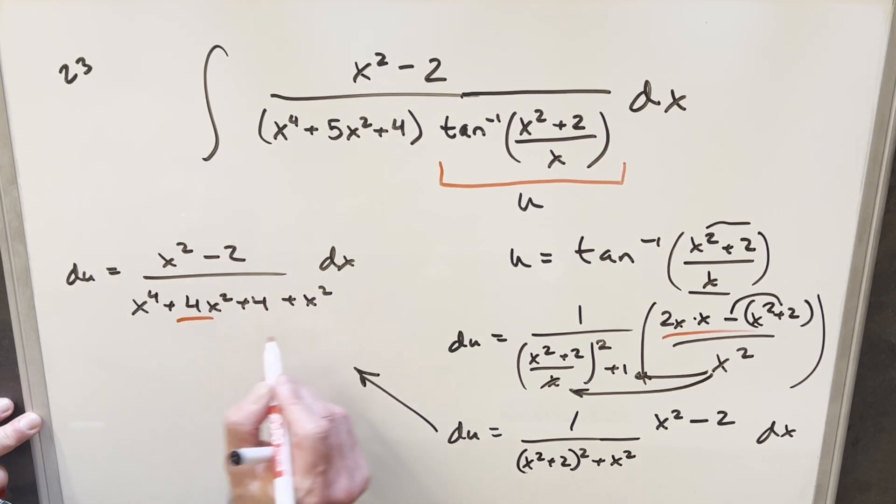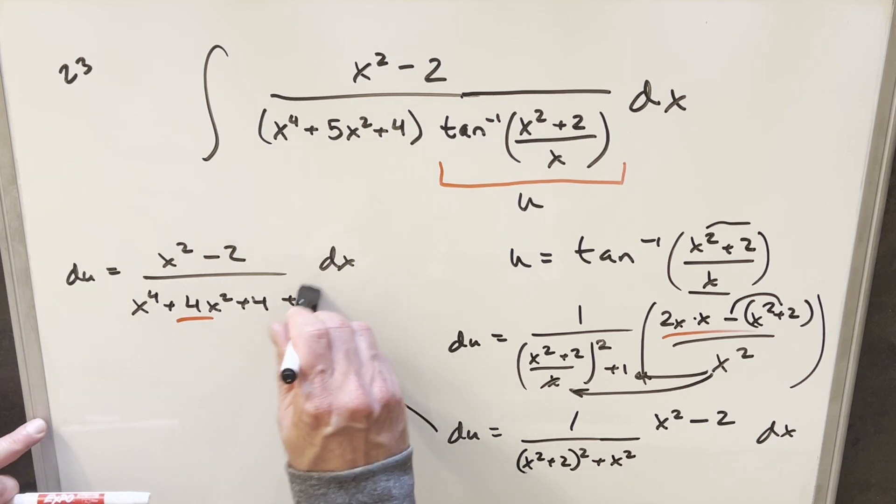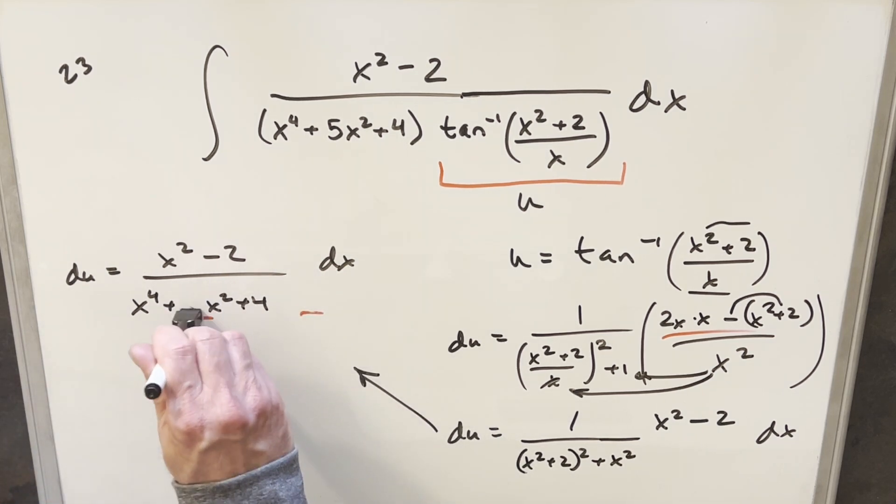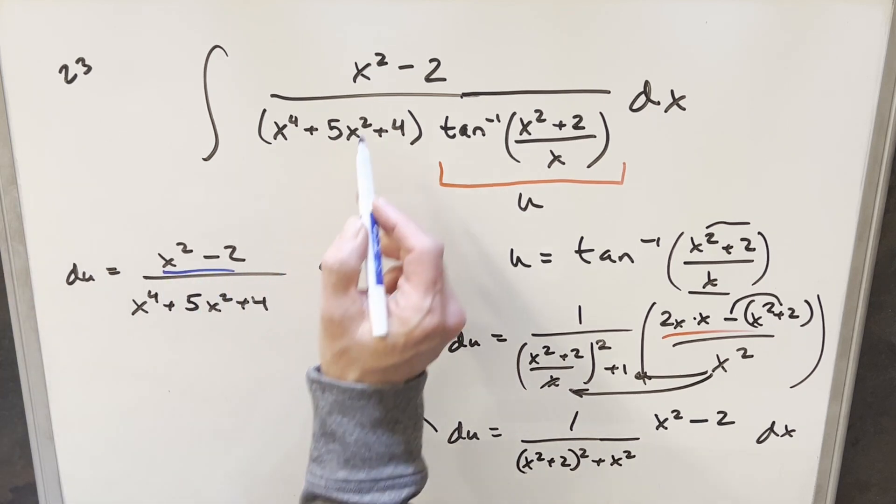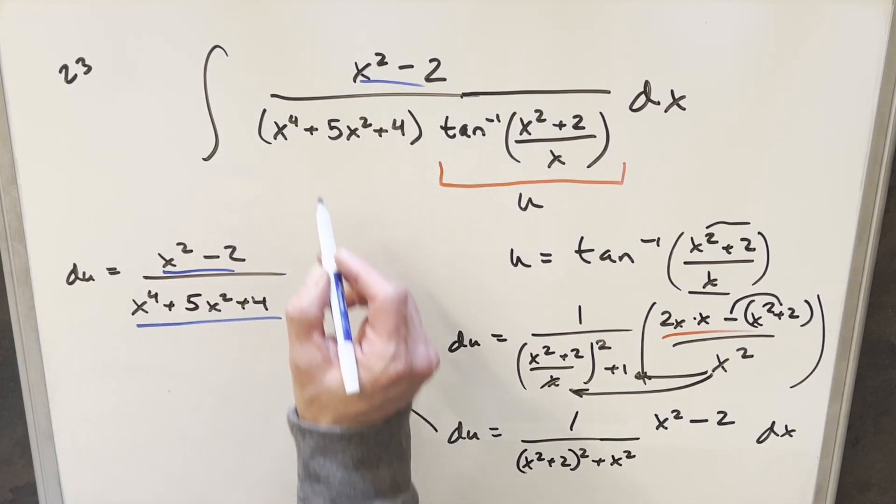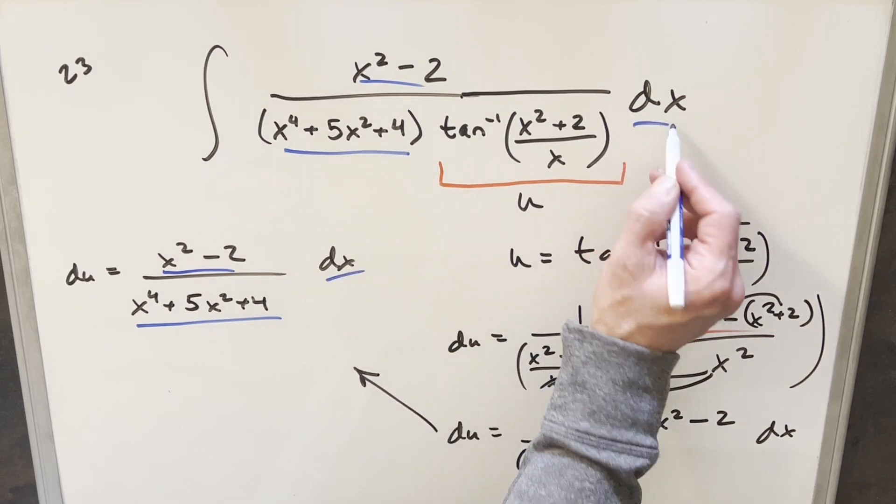But then just adding 4x squared and this x squared, putting that together, we're going to end up with 5x squared. But then just notice what happened with our du. x squared minus 2 matches that. x to the 4th plus 5x squared plus 4 matches this here. We've got our dx.